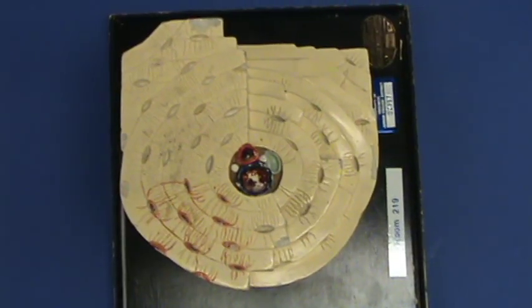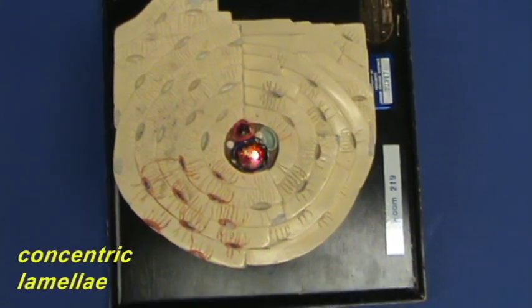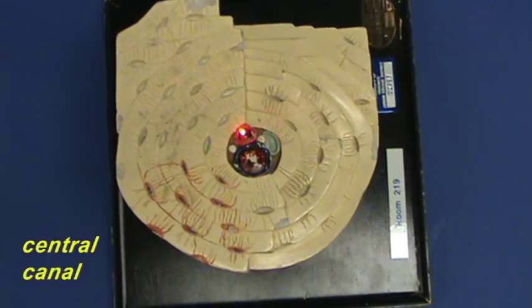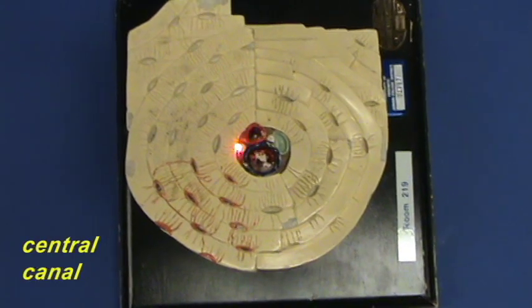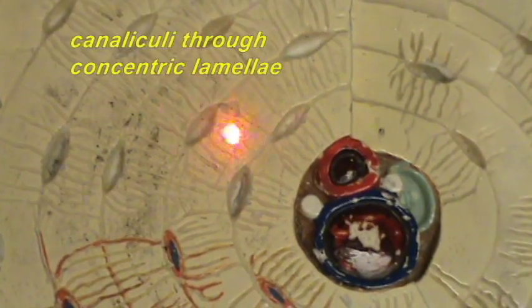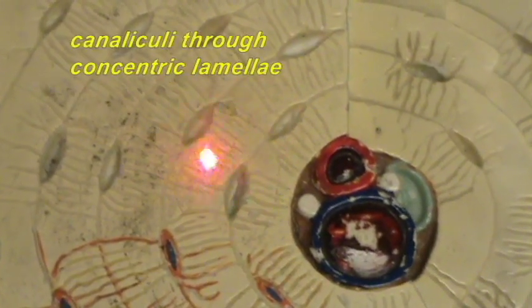You can see the concentric lamellae arranged around the central canal. You can also see the lacunae are represented here, the canaliculi going through the concentric lamellae.